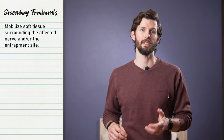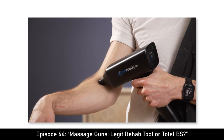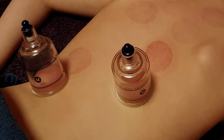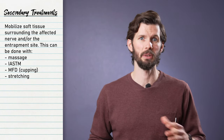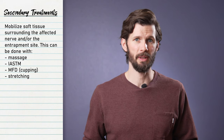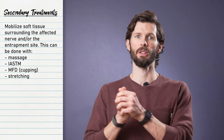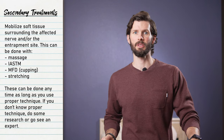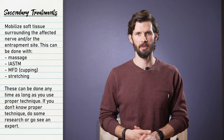Secondary forms of treatment include mobilizing the tissues that surround the affected nerve's pathway and/or the entrapment site. This can be done with massage, instrument-assisted soft tissue mobilization, decompression like cupping, or simply stretching. Mobilizing the tissue in this way can relieve compression on the nerve or break up adhesions, which can release the tension and reduce or eliminate symptoms. These secondary forms of treatment can be done anytime, as long as you know how to do them properly.